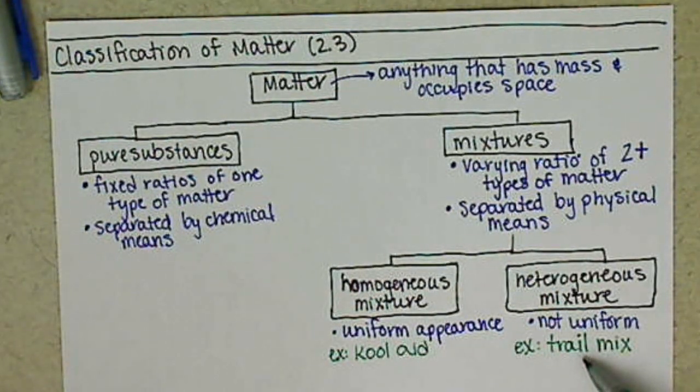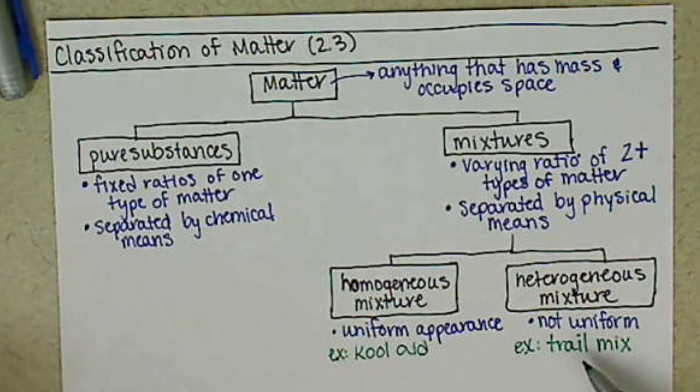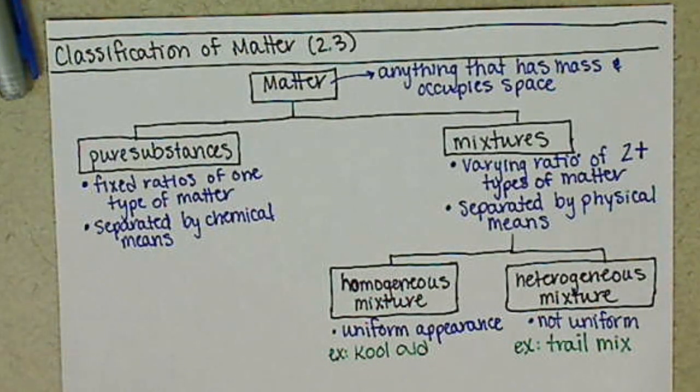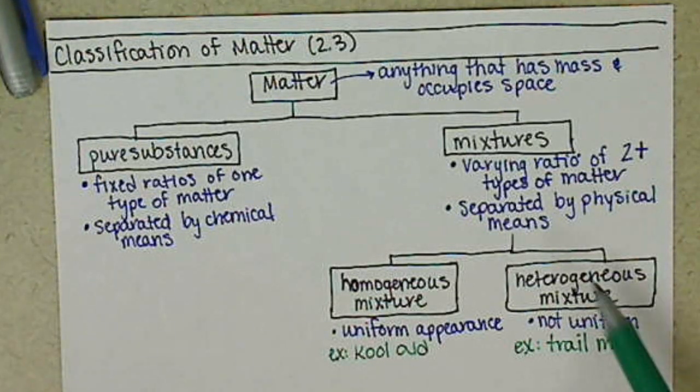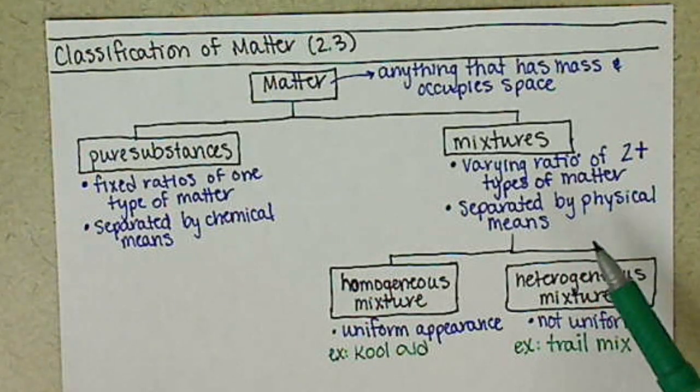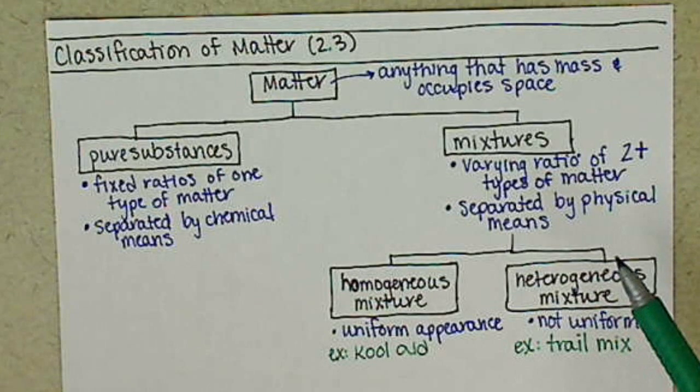Trail mix, again, is the easiest to think about, if you wanted to separate your peanuts into all peanuts, all raisins, and basically, ignore those and just take all the chocolate out, you're separating it just by physical means, by your tweezers, your fingers.